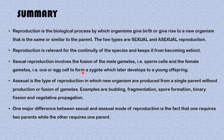With this we've come to the end of our lesson. Let's take a quick look at the summary. Reproduction is the biological process by which organisms give birth or give rise to a new organism that is the same or similar to the parent. The two modes of reproduction are sexual and asexual reproduction. Reproduction is relevant for the continuity of species and keeps it from becoming extinct. Sexual reproduction involves the fusion of male and female gametes to form a zygote which later develops into a young offspring. Asexual reproduction produces new organisms from a single parent without fusion of gametes; examples include budding, fragmentation, spore formation, binary fission, and vegetative propagation. One major difference is that sexual reproduction requires two parents while asexual requires only one.